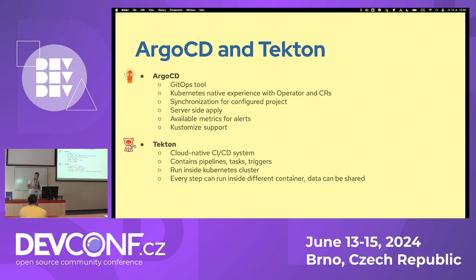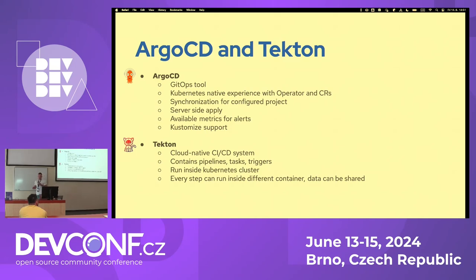Another tool for running automation, in our case CI pipelines, is Tekton. It's a cloud-native CI/CD system. It contains pipelines, tasks, and triggers, which are also custom resources controlled by the Tekton operator. So we can store every pipeline and every task — which can be shared across pipelines — as custom resources in the Git repository.